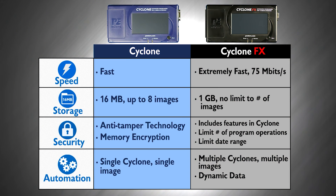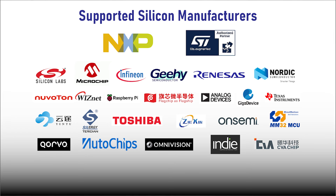The Cyclone standalone programmer comes in two series: the Cyclone and the Cyclone FX. The Cyclone series are fully featured standalone programmers, while the more advanced Cyclone FX series offers faster programming speeds, more storage for images, enhanced security features, and advanced automation features. Both series support ARM processors from a wide range of manufacturers, as well as 8, 16, and 32-bit processors from NXP and STMicroelectronics.